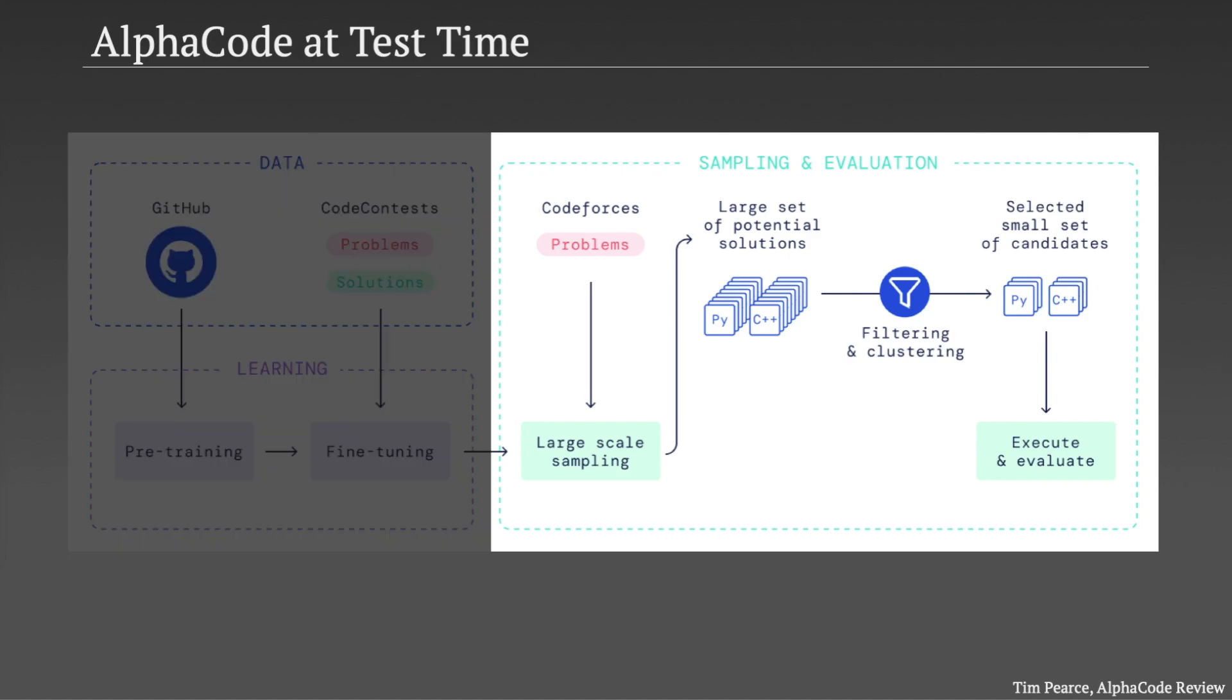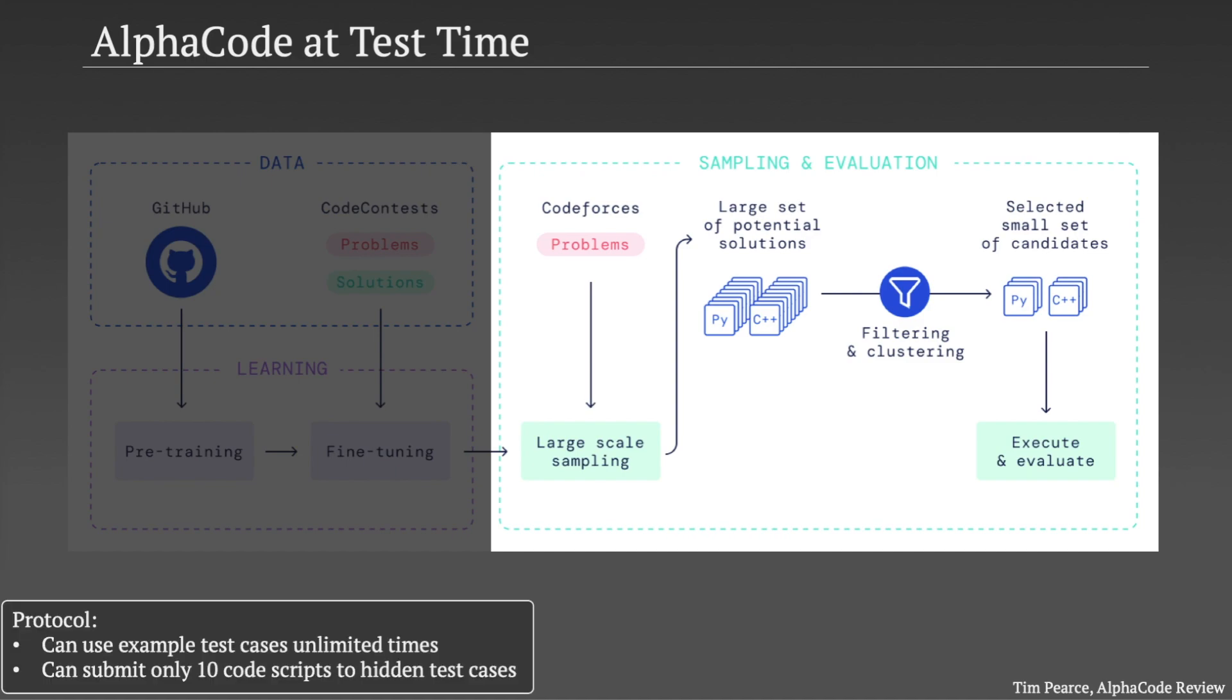Let's focus first on how the system works at test time. It's important to note upfront that there's a very specific protocol they allow themselves when solving these coding problems, and this protocol really determines the pipeline of the system. They say that they are allowed to use the example test cases as much as they'd like, since these are given as part of the problem, but they do restrict themselves to a maximum of 10 submissions over the held out hidden test set cases. There are really three separate stages going on at test time, which we'll break down.